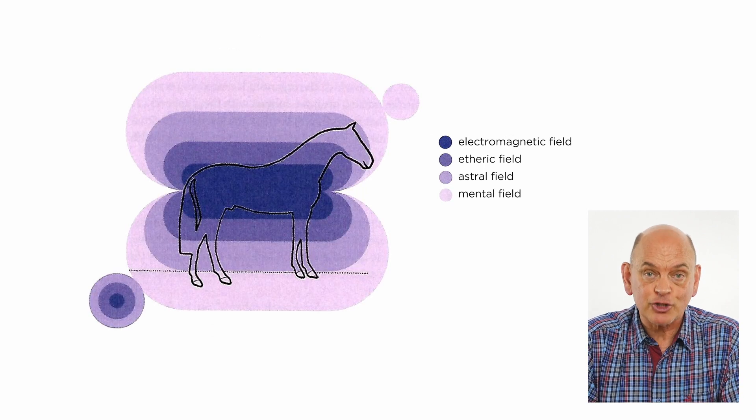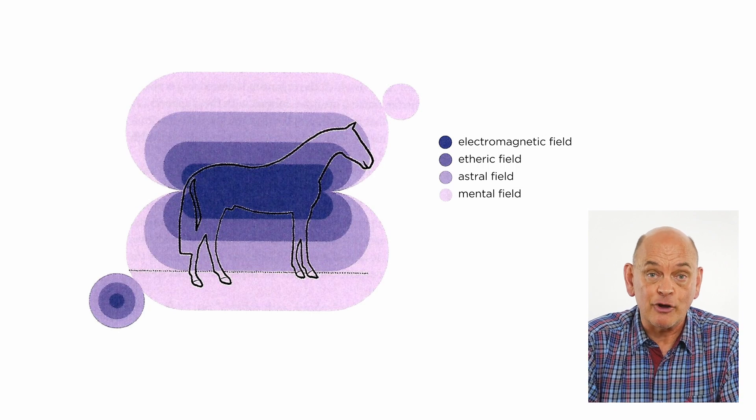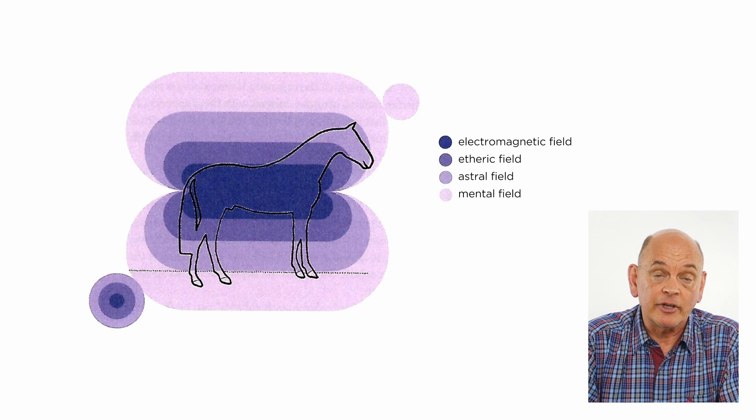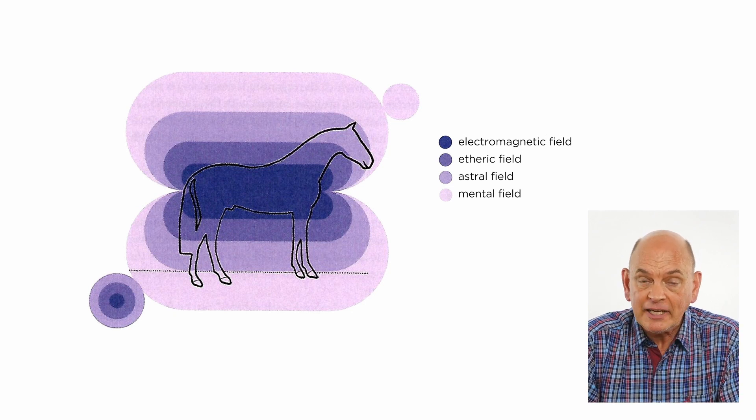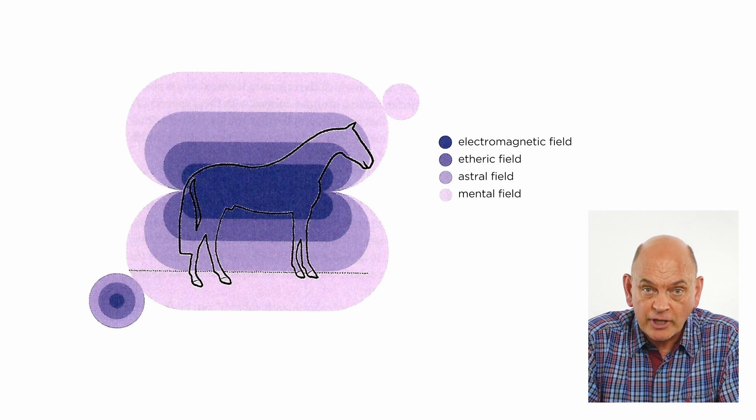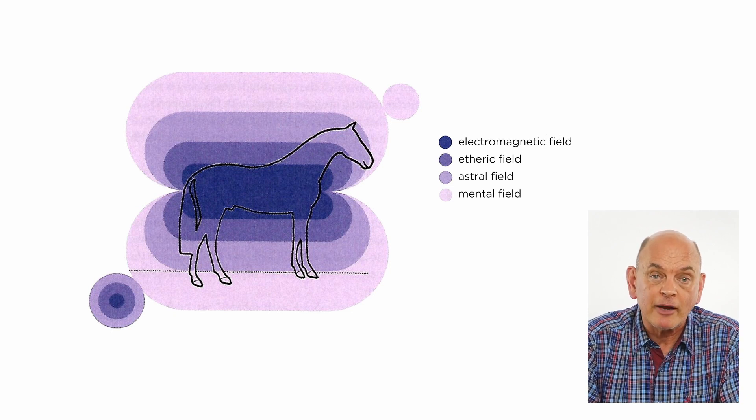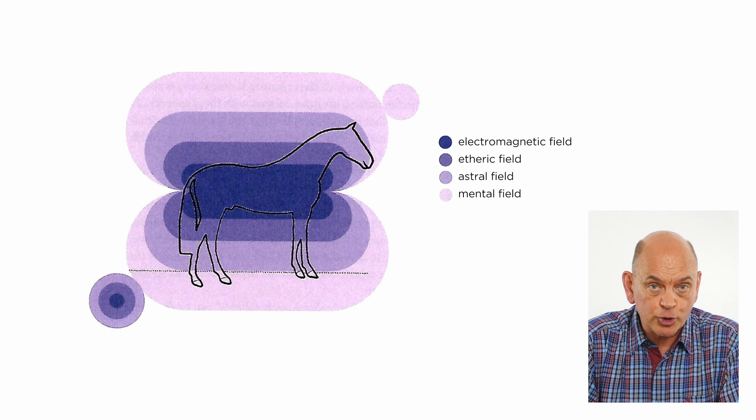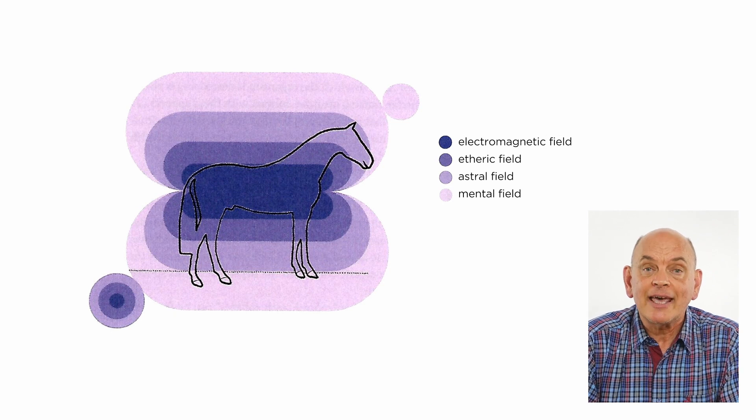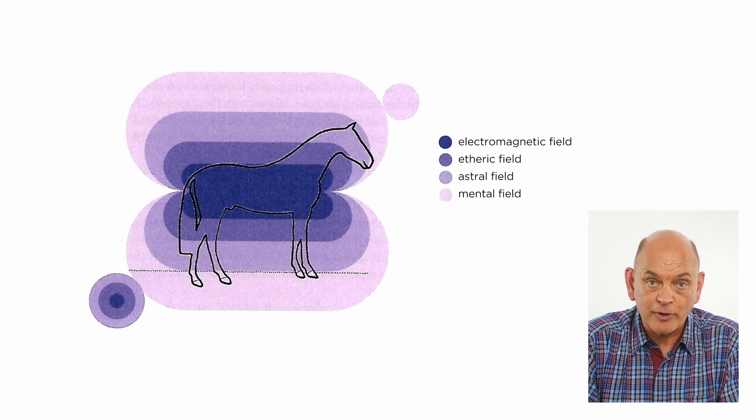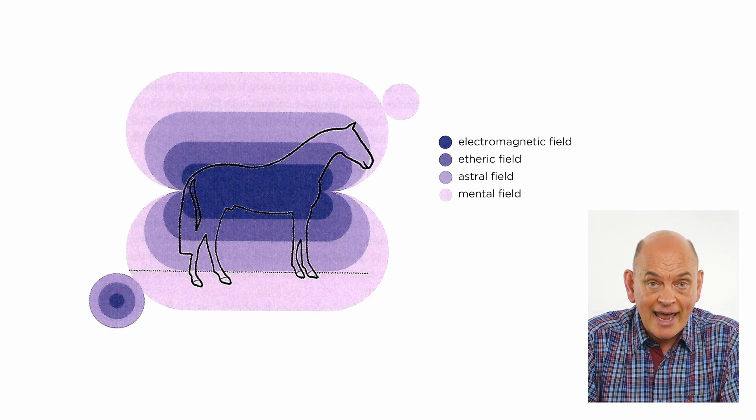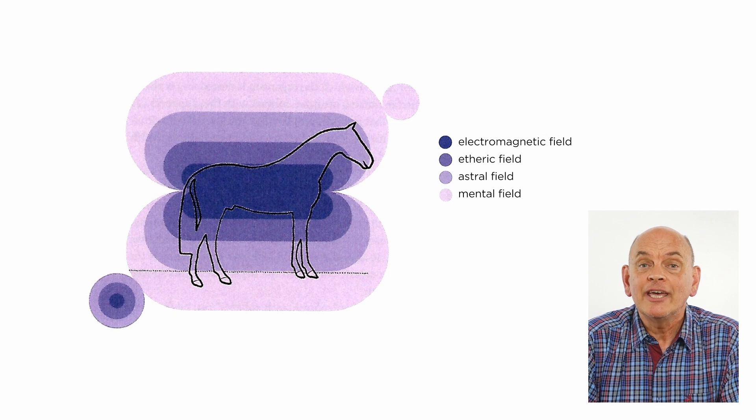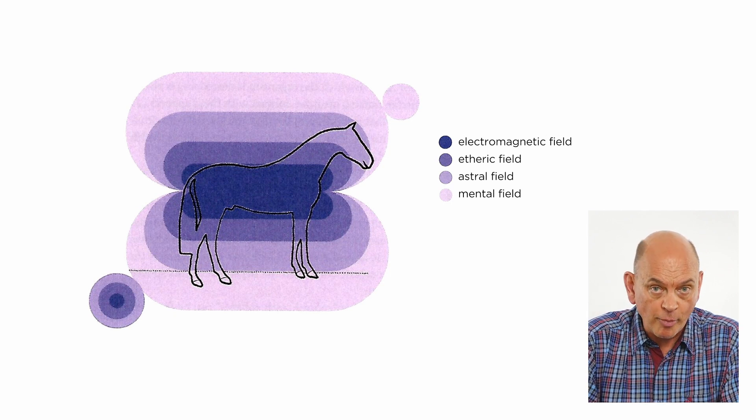Then this astral energy incarnates in an animal, giving the animal feelings. A tree can have feelings, we're learning this from science, but an animal is truly feeling. It has this incarnated astral body, and you can find this in the chakras the animal has, and each chakra has its own hormones.